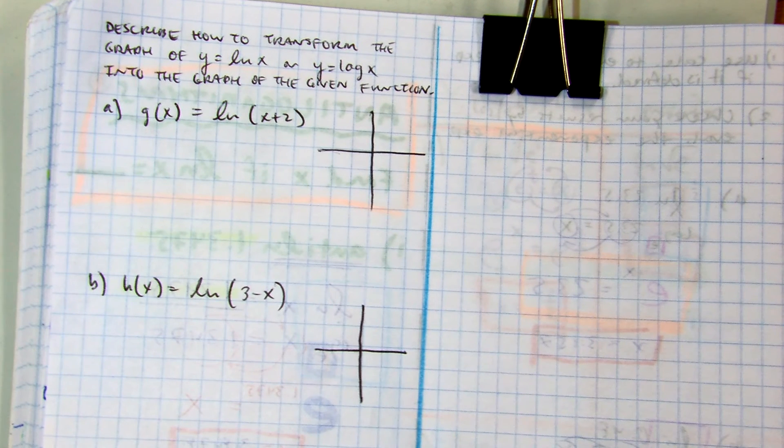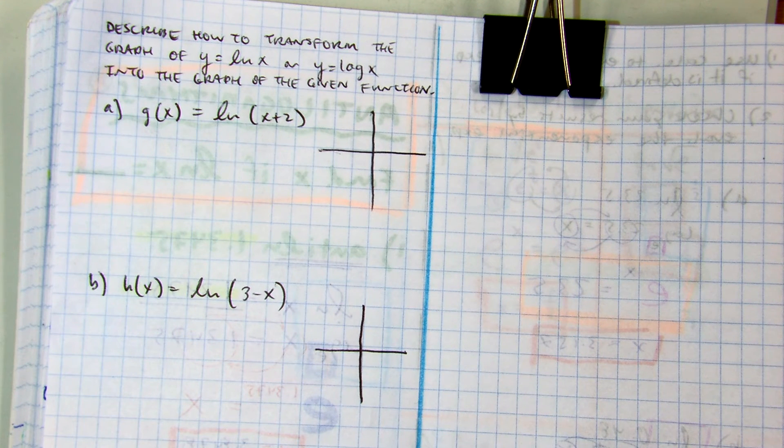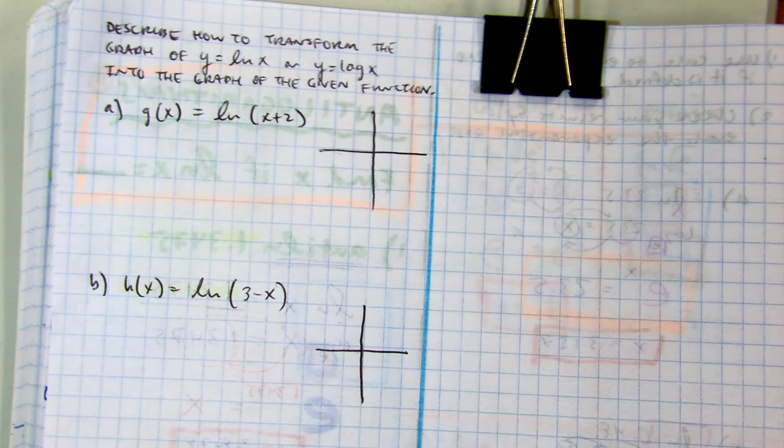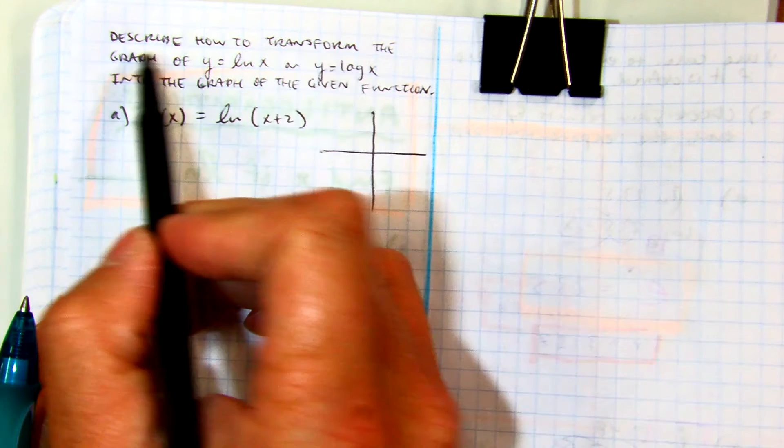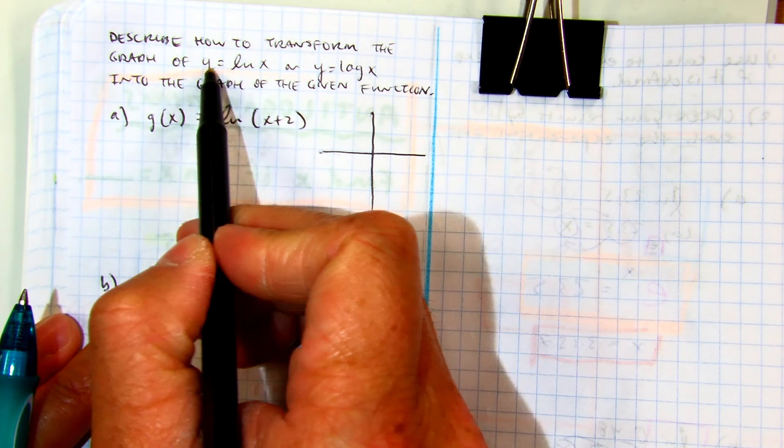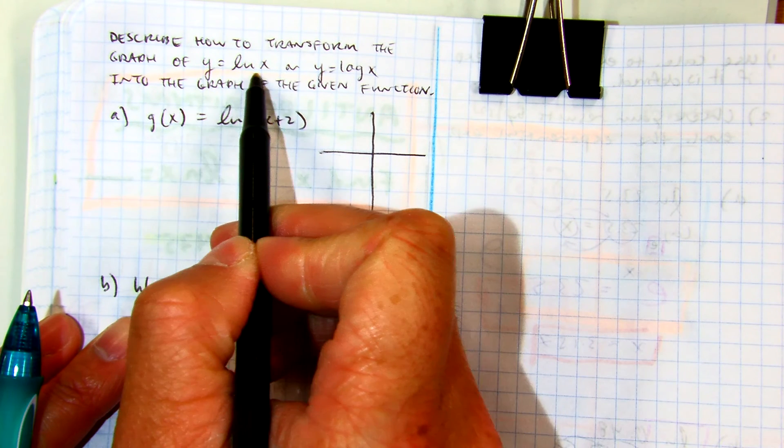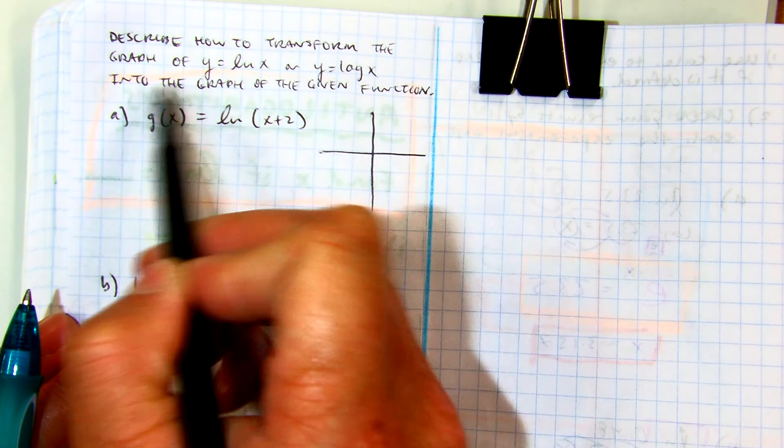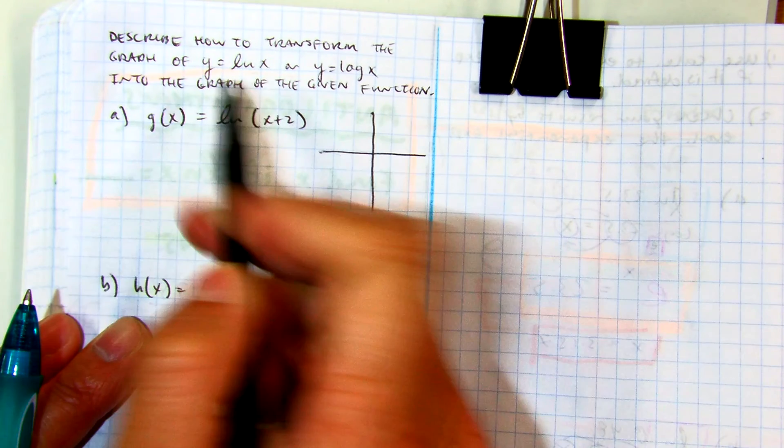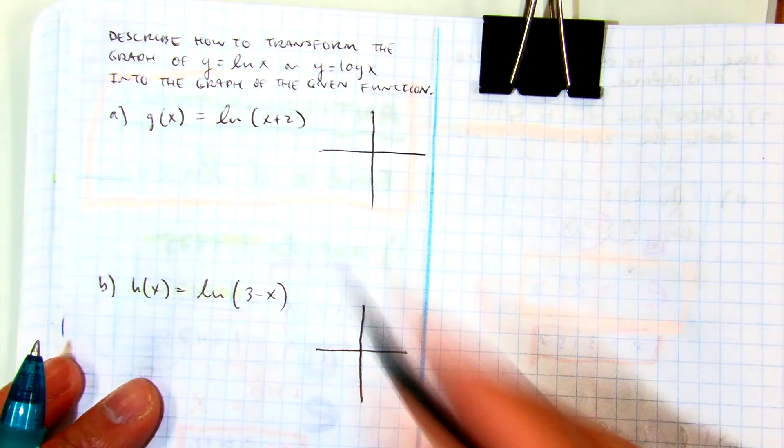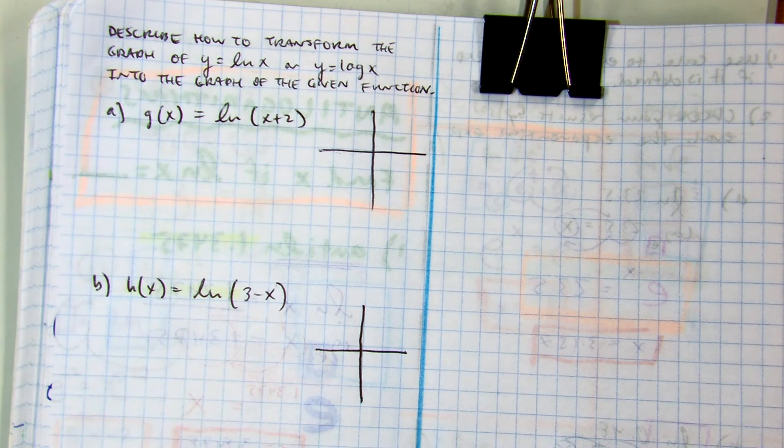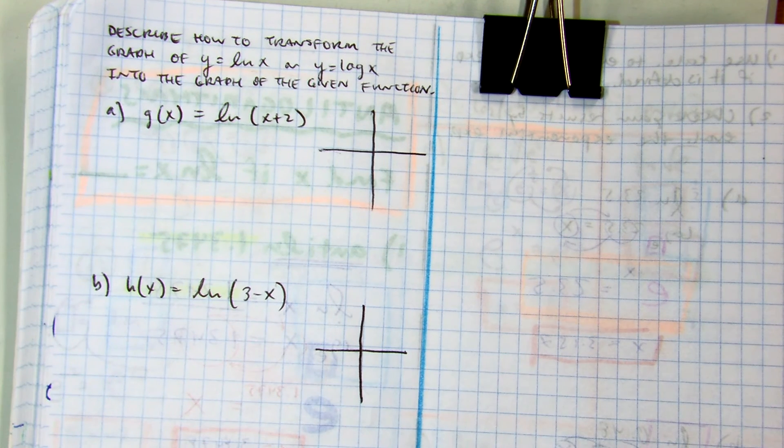Right, here we're supposed to describe how to transform the graph of y equals ln(x), natural log of x, or y equals log x, into the graph of the given function. So our original graph, let's put in a super light color, let's do pink.